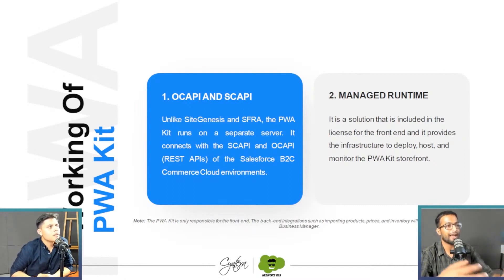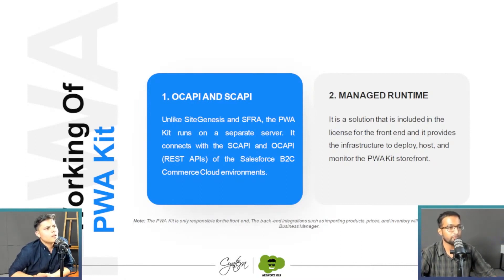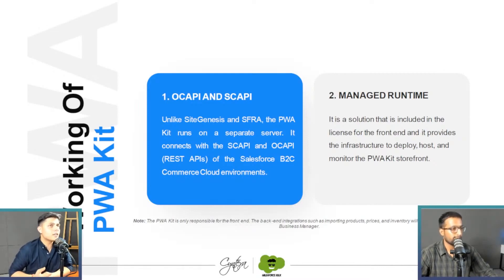With a centralized backend, your mobile application and your progressive web application are both connected to that same centralized backend. This means that if anyone is already running a business with an existing e-commerce website that's up and running, they can change their backend from the existing one to Commerce Cloud using headless commerce APIs and the PWA Kit, while keeping the same website as a storefront.